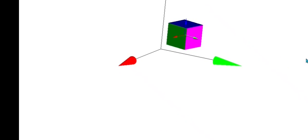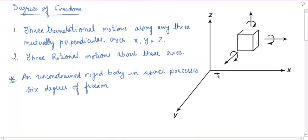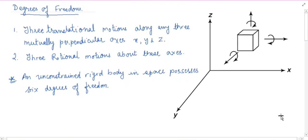As we can see with this animation, an unconstrained body in space can have six independent motions — three translational and three rotational. That is translational motion along the x-axis, y-axis and z-axis, and three rotational motions about the x-axis, about the y-axis and about the z-axis. So this is about the degrees of freedom of a rigid body in space — an unconstrained rigid body in space possesses six degrees of freedom.